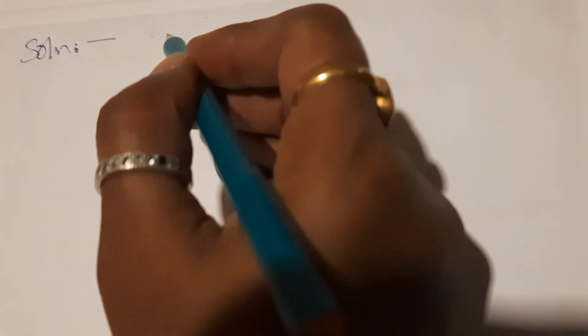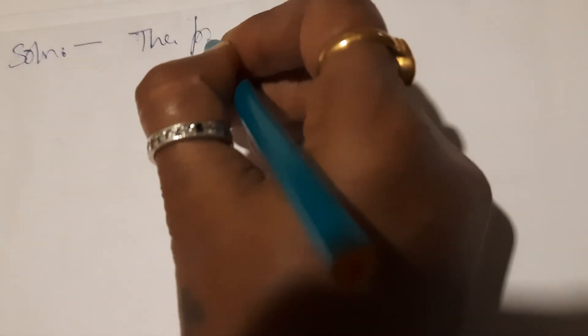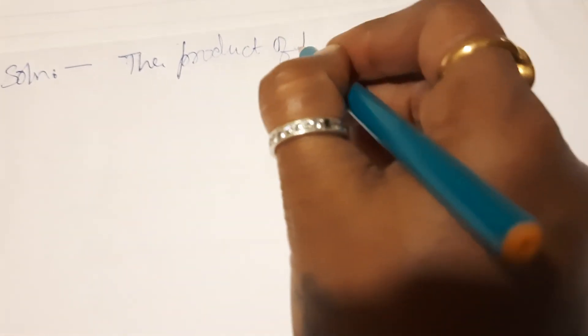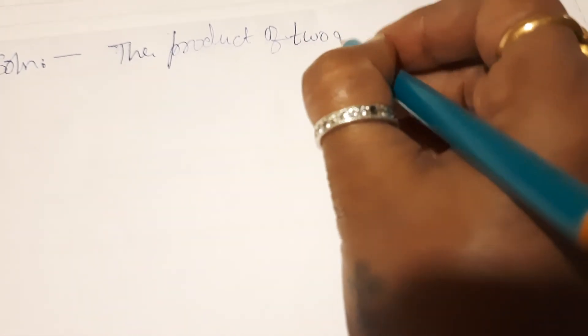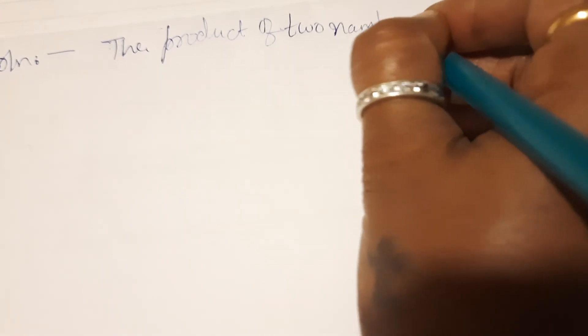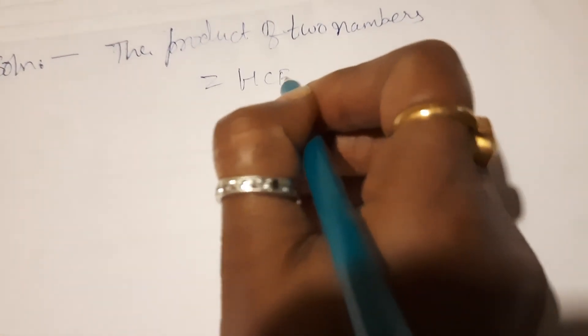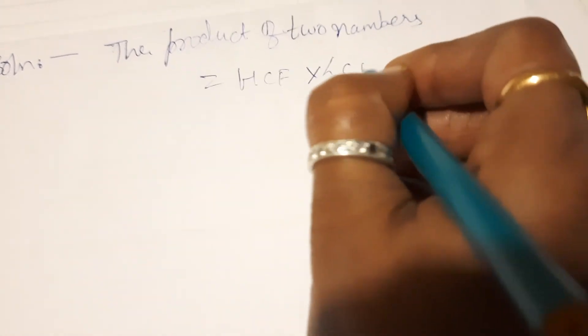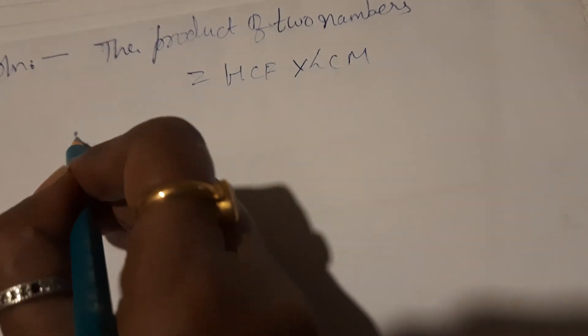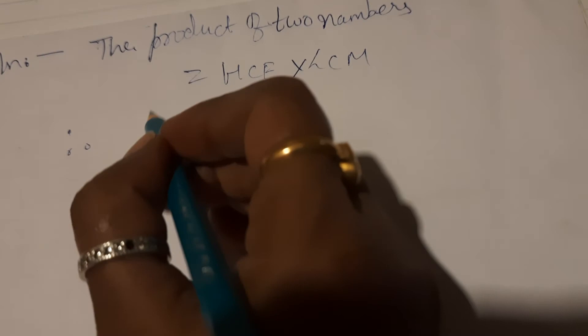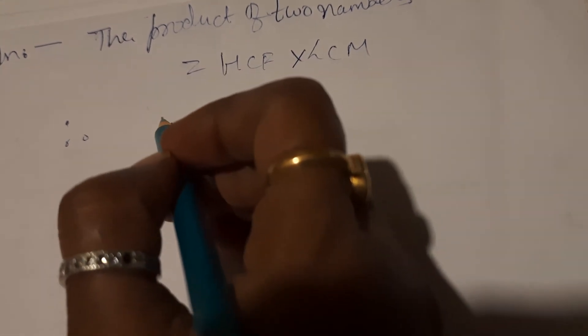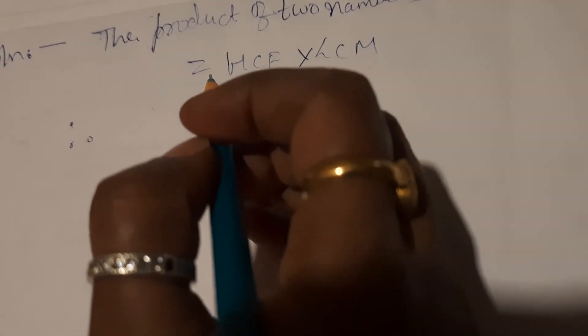So solution: the product of two numbers is equal to HCF into LCM. Therefore, the product of two numbers is equal to HCF into LCM. And what are the two numbers?